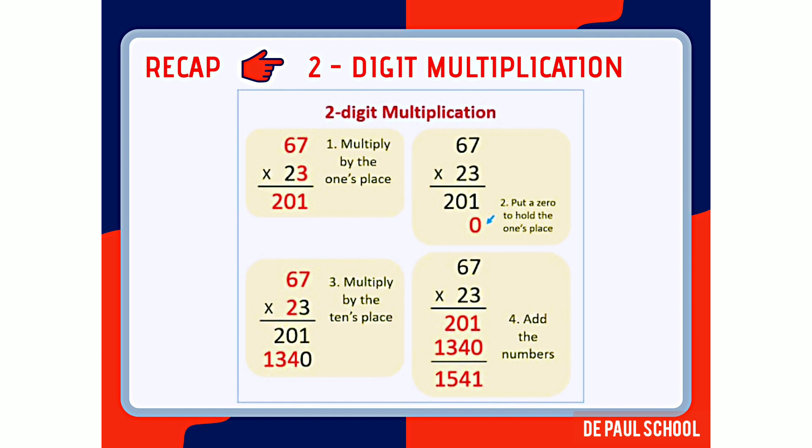In the next step, put a zero to hold the ones place in the next row. Then in the third step, multiply the multiplicand 67 by the digit in the tens place, which is 2. So 67 multiplied by 2 gives 134. In the last step, add the numbers from both rows to get the final answer, which is 1541.